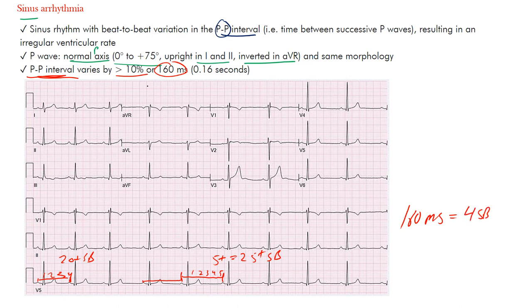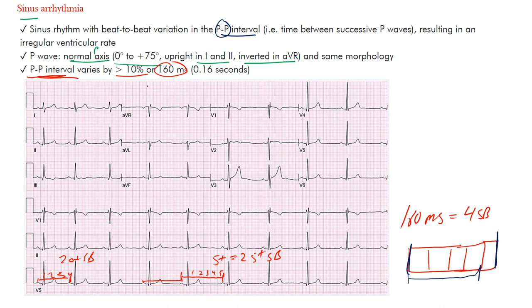Remember, 160 milliseconds equals four small boxes. From one thick line to the next there are five small boxes, and we're seeing at least a 160-millisecond change between P-to-P intervals. Hopefully that makes sense. You can count that on your own and you'll see the variation is clearly there.